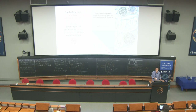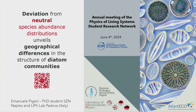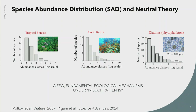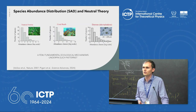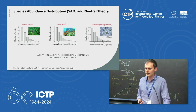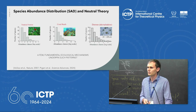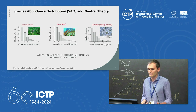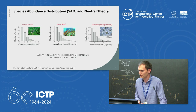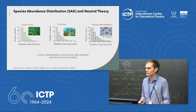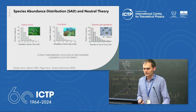I'm Manuel Peggani, a PhD student, and I'll briefly discuss a paper we just published on neutral theory, species abundance distributions, and diatom communities. A species abundance distribution (SAD) is simply a distribution of the number of species that have a given abundance in a community — you count individuals and make a histogram. Even for very different ecosystems — tropical forests, coral reefs, diatom communities — you observe similar patterns.